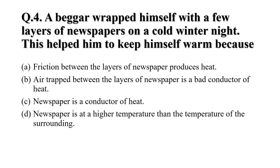Question 4: A beggar wrapped himself with a few layers of newspaper on a cold winter night. This helped him to keep himself warm because — option A: friction between the layers of newspaper produces heat, option B: air trapped between the layers of newspaper is a bad conductor of heat, option D: newspaper is at higher temperature than the temperature of the surroundings. The correct answer is option B: air trapped between the layers of newspaper is a bad conductor of heat.